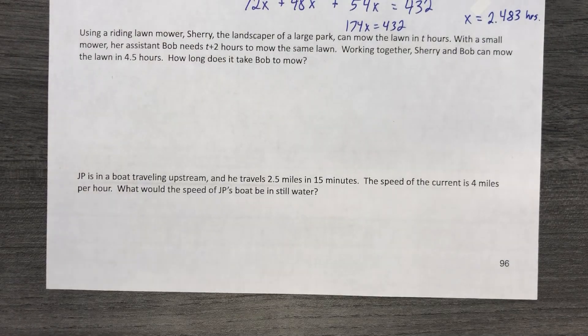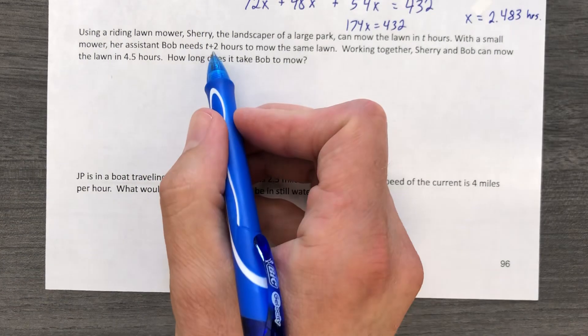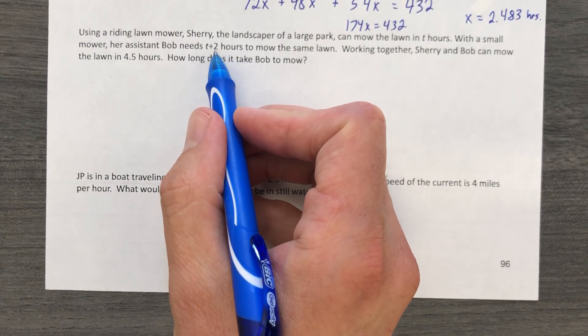Using a riding lawnmower, Sherry, the landscaper of a large park, can mow the lawn in T hours. With a small mower, her assistant Bob needs two more hours, T plus two hours, to mow the same lawn.